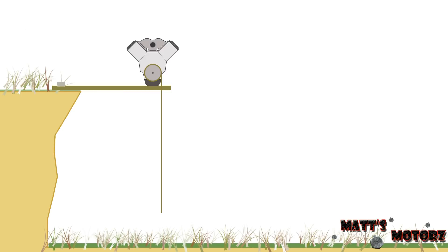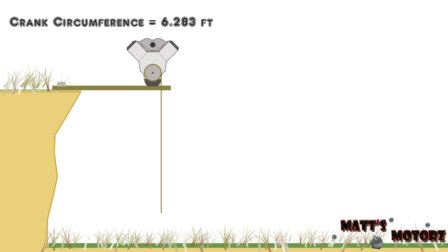Let's move on to examples, because I think examples are the best way to learn. In order to make things easy, we're going to choose an engine such that the lever arm of the crankshaft is 1 foot. Meaning, if the engine produces 100 foot-pounds, it can lift 100 pounds. In order to do that, we need to make the crankshaft circumference 6.283 feet, and also for ease, we're going to make the cliff depth 6,283 feet.